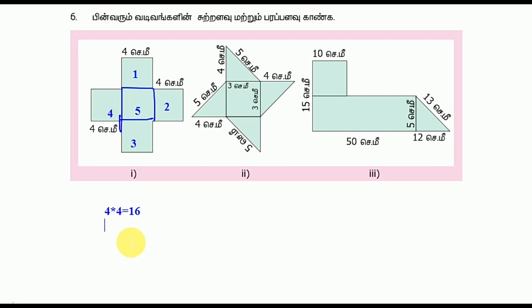A square is 4 into 4 is 16. So how many times are there? 5. So we have the formula that we use. We will tell you how many times there are. The formula is 4a. 4a is the formula.